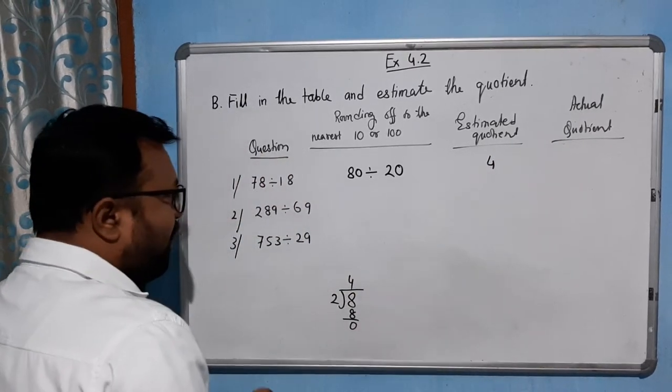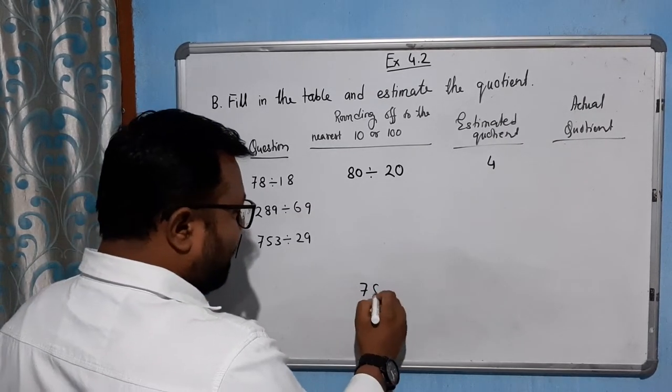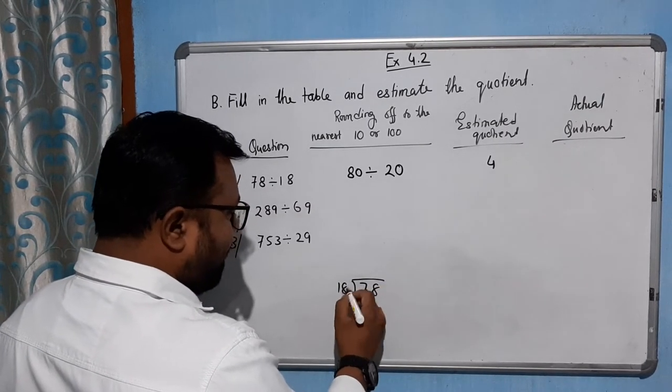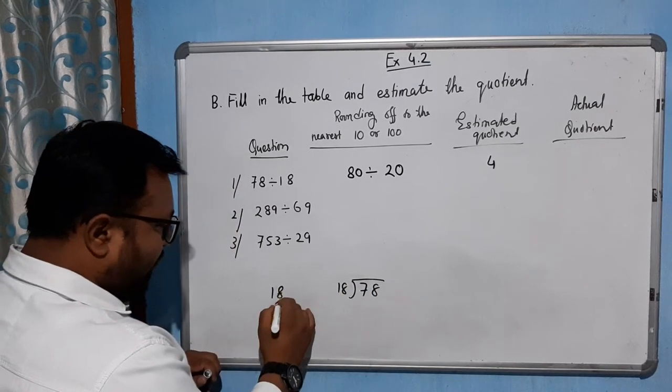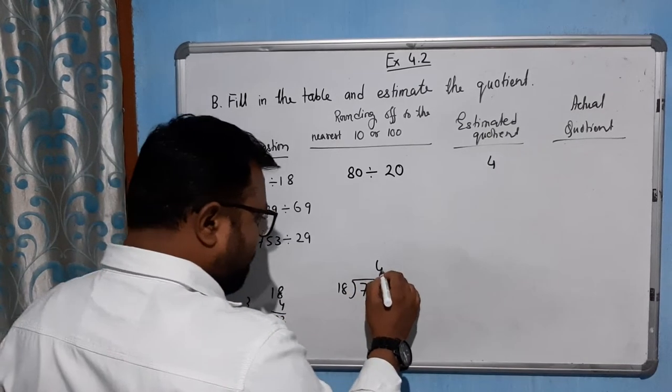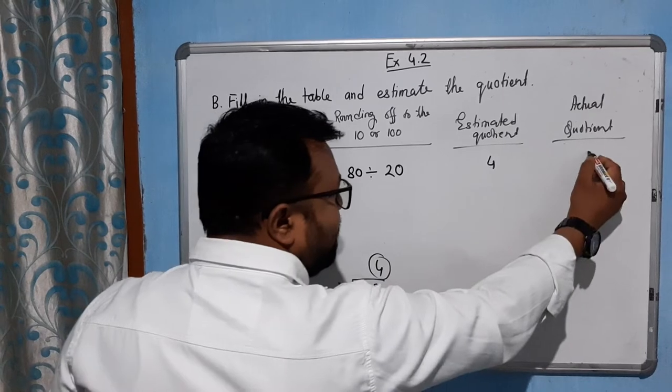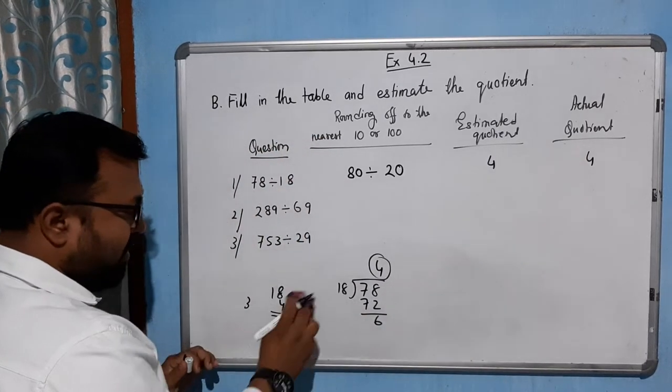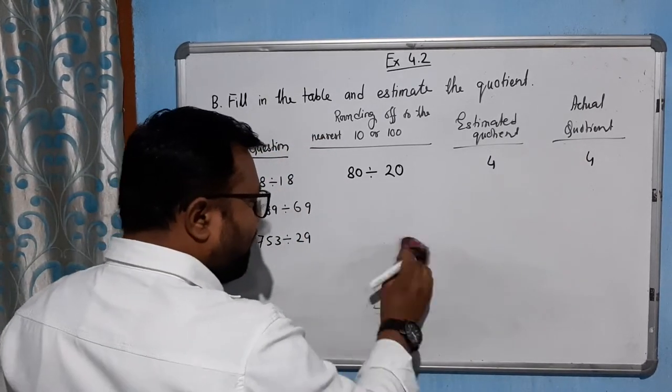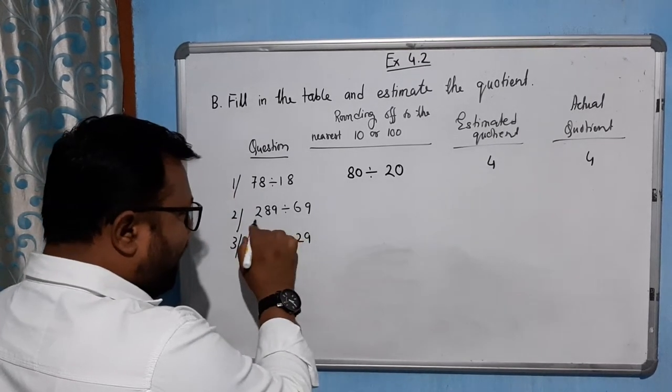And if we talk about the actual quotient, 78 divided by 18. Let's see: 18 times 4 is 72. So the actual quotient is 4. Now come to the next part.